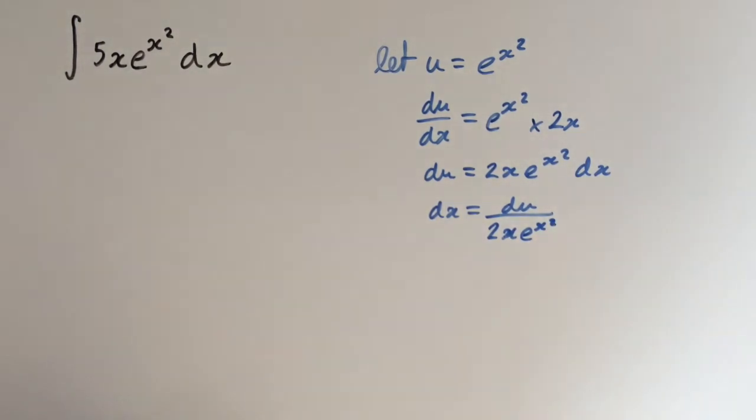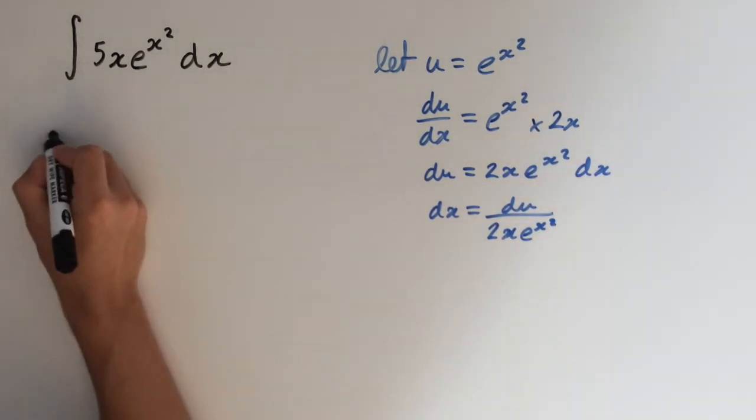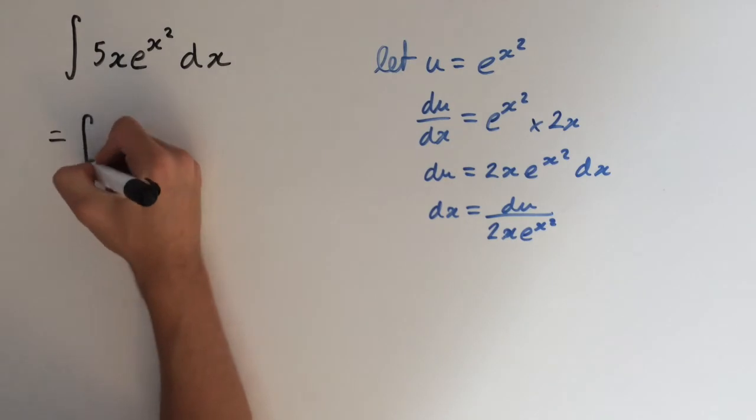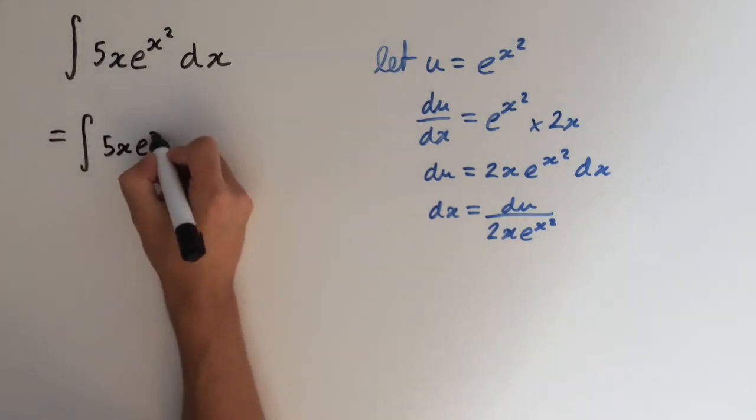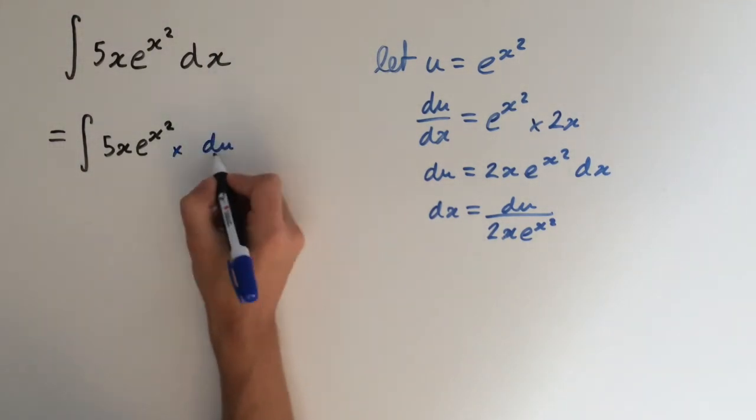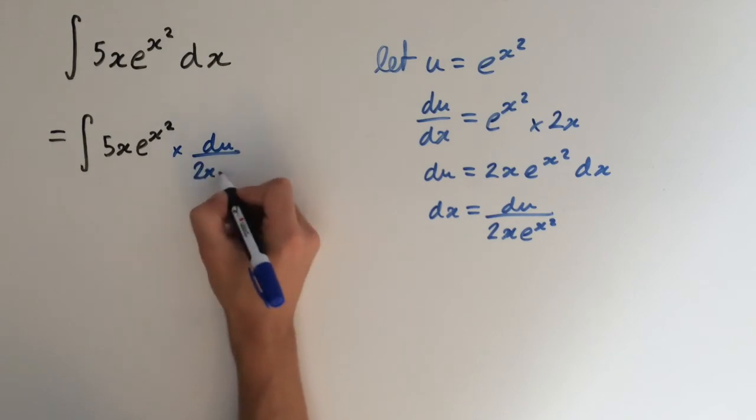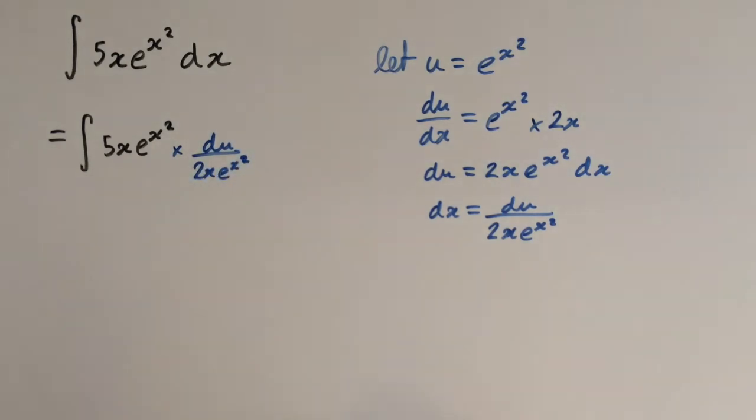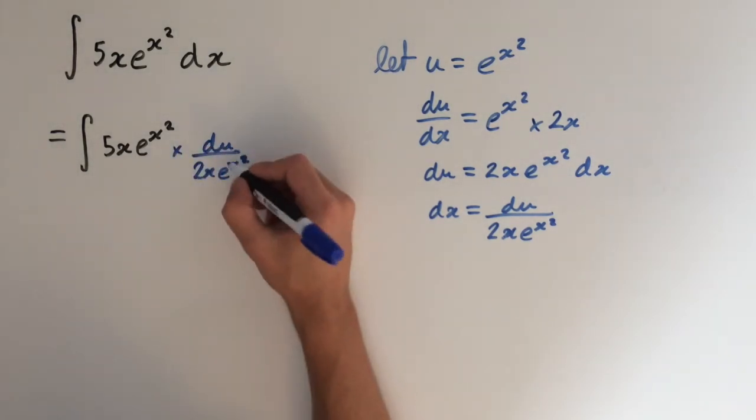So now we can substitute this back into the integral. So this is going to give us integral of 5x e to the x squared times du over 2x e to the x squared. So you can see, all of this stuff is just going to cancel out.